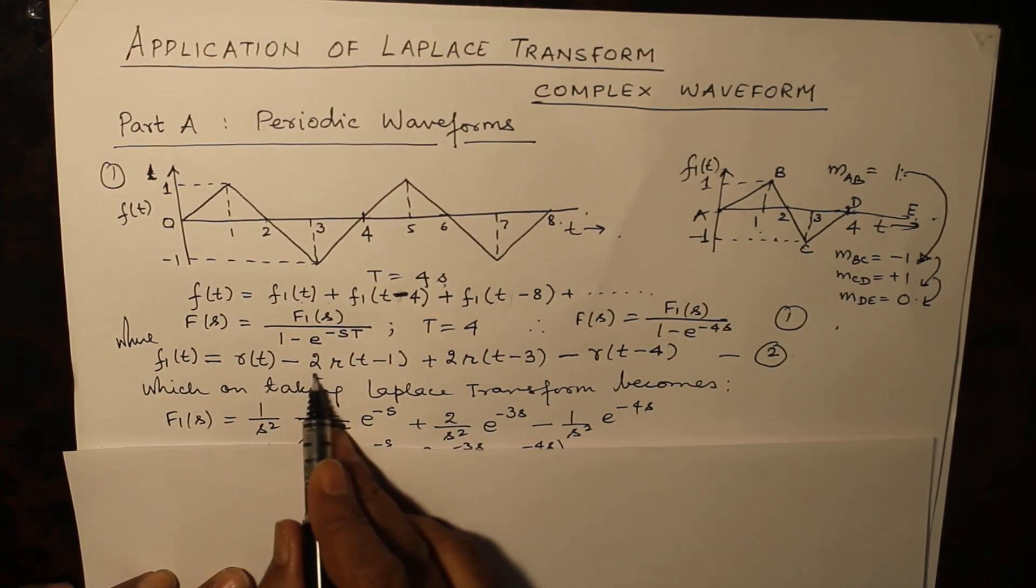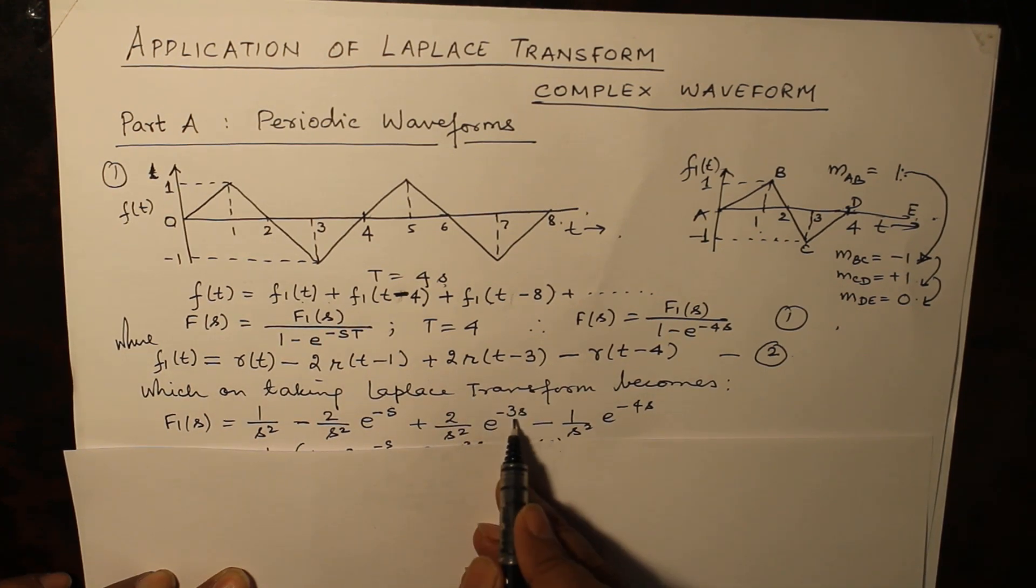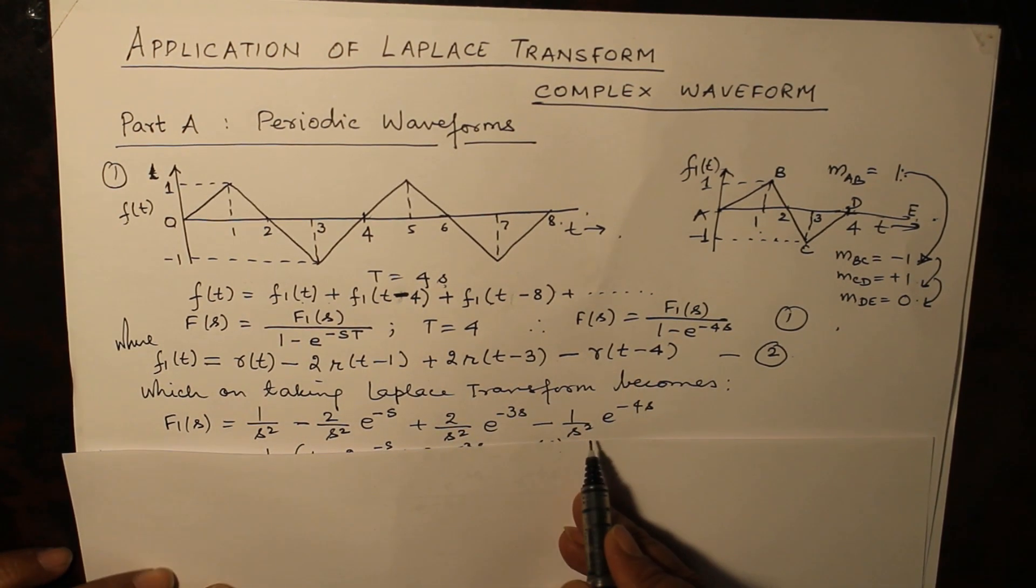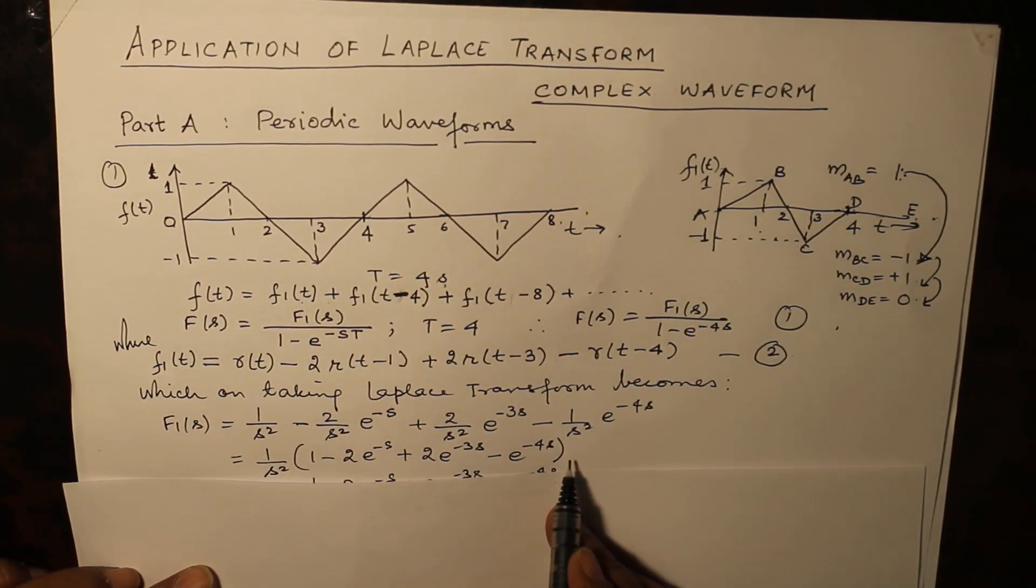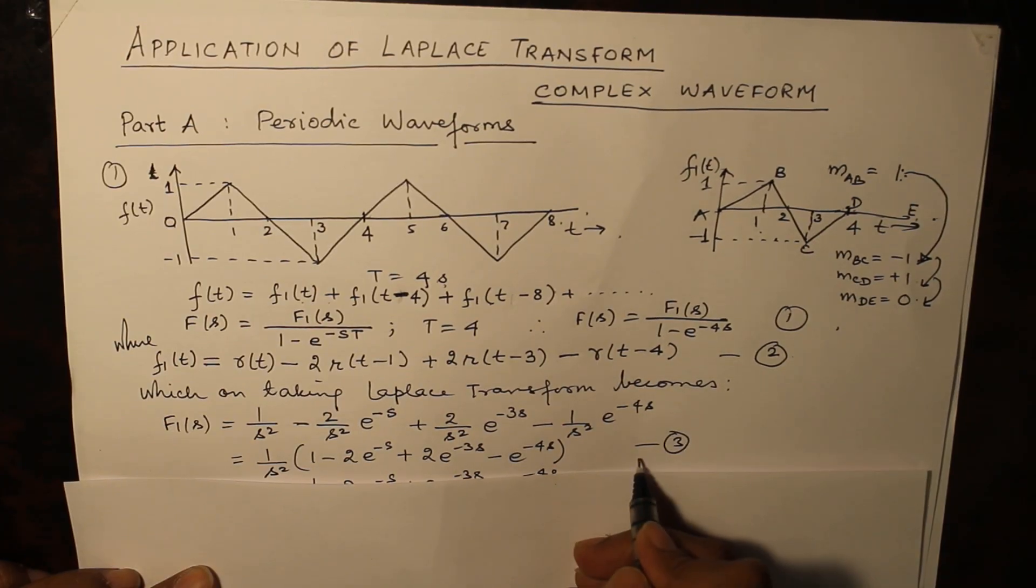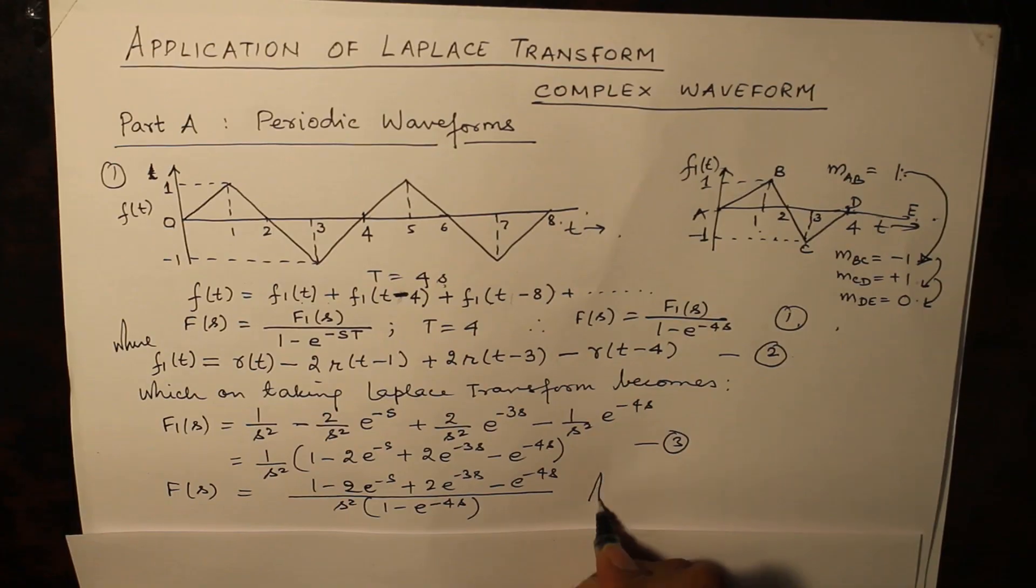f1(s) is equal to 1 over s squared minus 2e raised to the power minus s over s squared plus 2e raised to the power minus 3s over s squared minus e raised to the power minus 4s over s squared. Taking out 1 over s squared common, we get this term, and substituting in equation 1, we get the value of F(s), which is your answer.